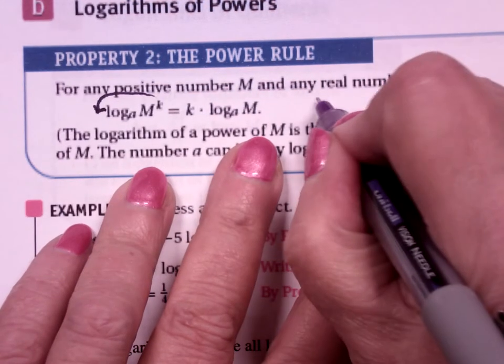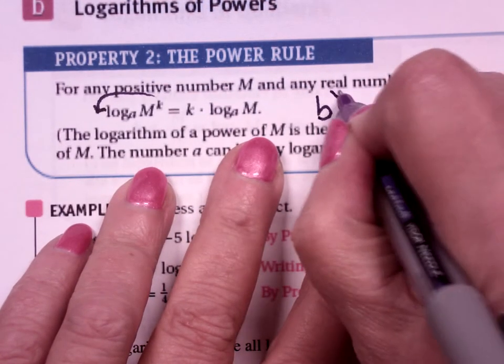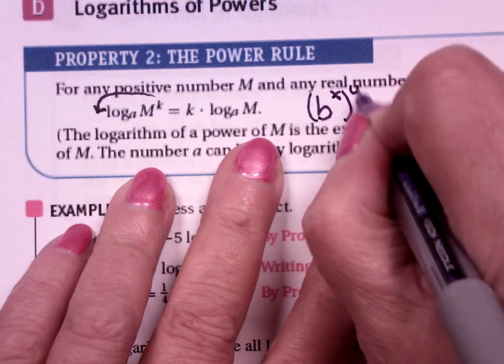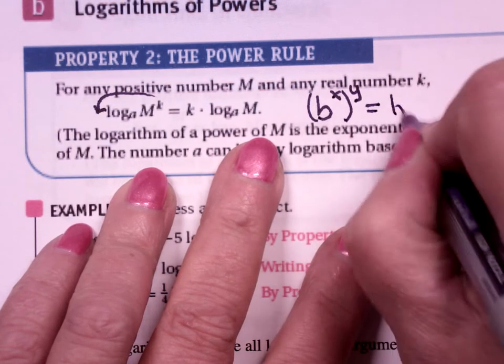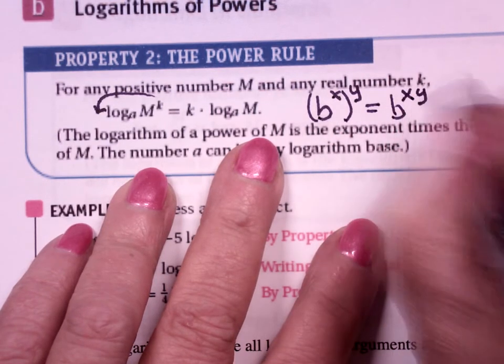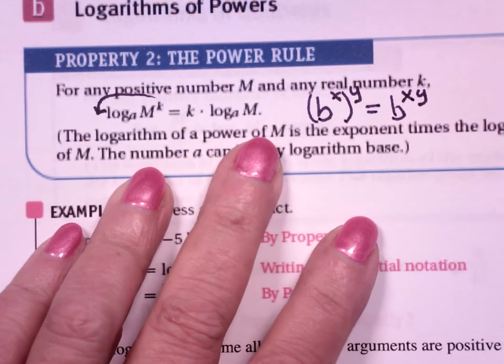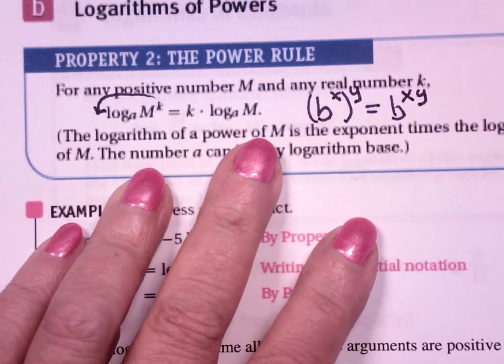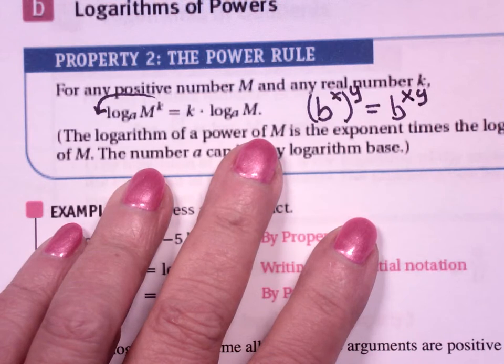That's why it matches up with this guy, b to the x to the y power is b to the x times y. It's the product of two exponents because the log is an exponent.